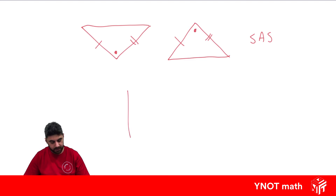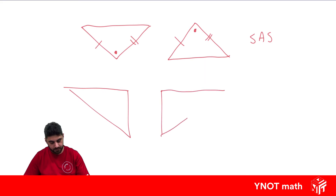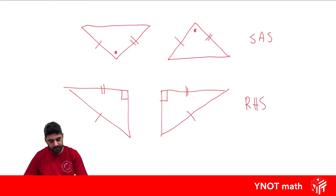What about this one here? We have right angles equal, the hypotenuses equal, and these two sides equal, so we can use the RHS test to prove that they're congruent.